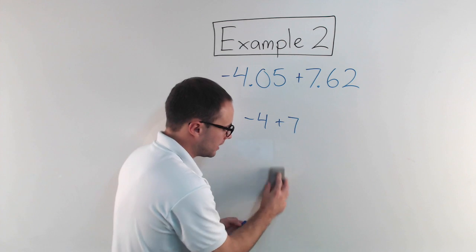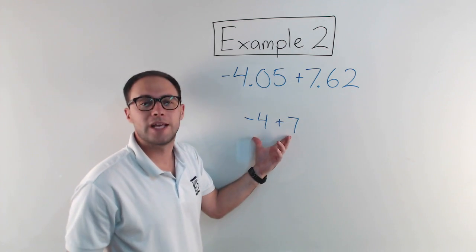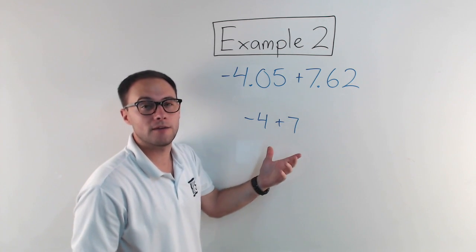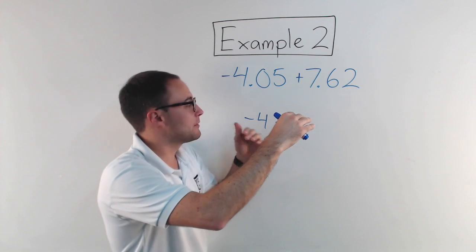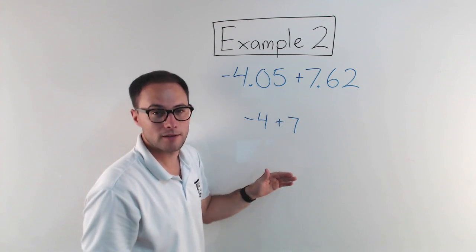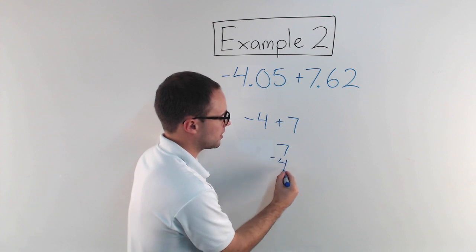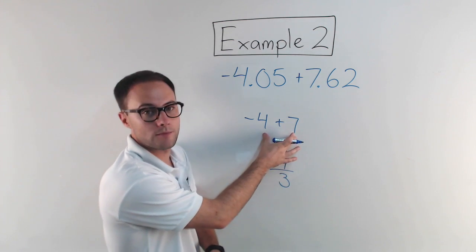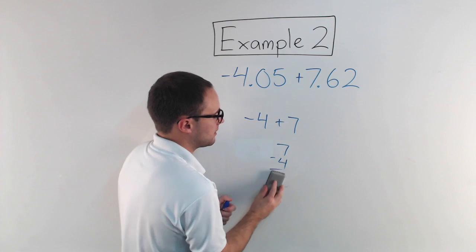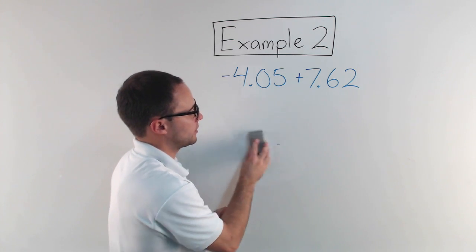But to actually go ahead and do that, what you would do is you take the absolute value of each, and whichever one's greater, that goes on the top. You're subtracting the least from it, so that would be seven minus four equals three.